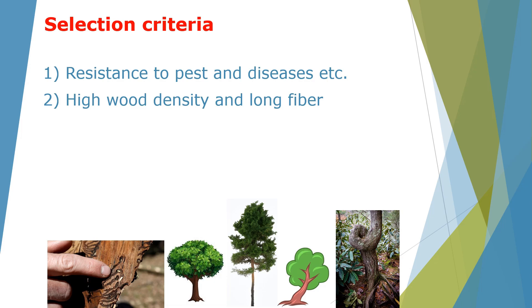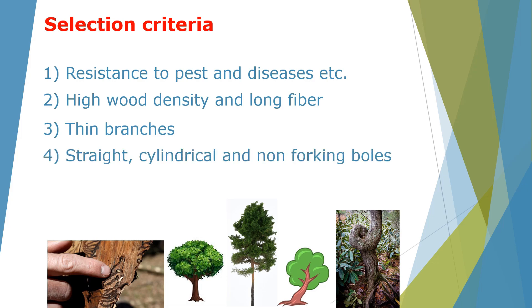You want trees that have thinner branches — thick branches are not what you're interested in; it's the trunk of the tree that provides prime wood. You also want trees that have straighter, cylindrical, and non-forking boles or trunks. The ideal tree to look for is something like the taller tree in the middle of the picture, which I'm trying to highlight.